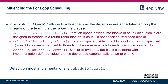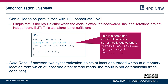If you want to save a little overhead, schedule guided might be an option. It is very similar to dynamic, but the block size starts at an implementation-defined value and decreases exponentially over the course of computation down to the chunk size, which is 1 if not specified explicitly. So now we know we can parallelize a for loop with the omp for work sharing construct.